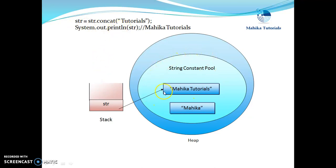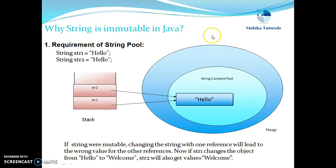So this is how string objects are immutable — whenever you apply any operation on a string object, a new object is created with the resultant value, and the original object is never changed. We have seen that string objects are immutable. Now next we will see why these string objects are immutable. There are a number of reasons; we are going to discuss some of them.